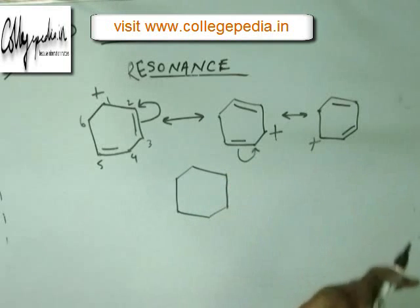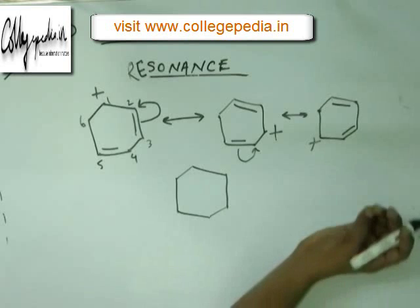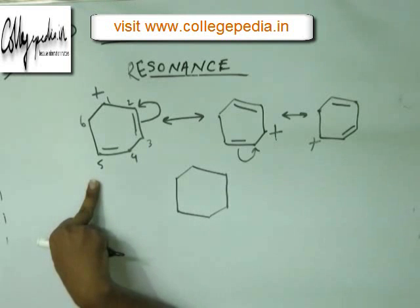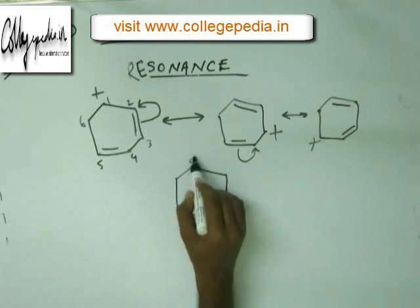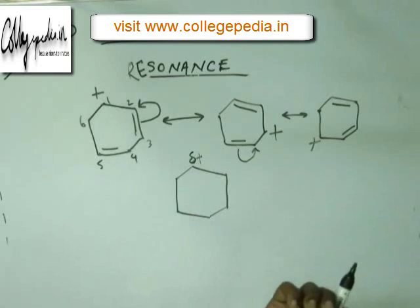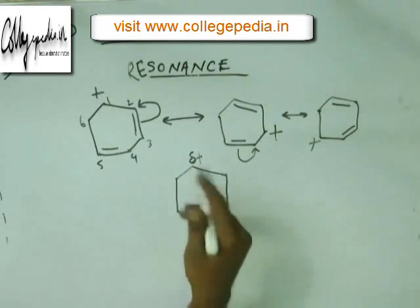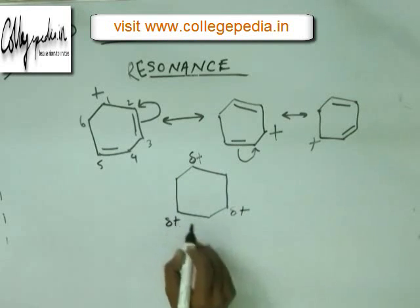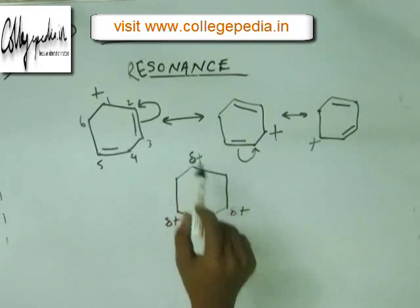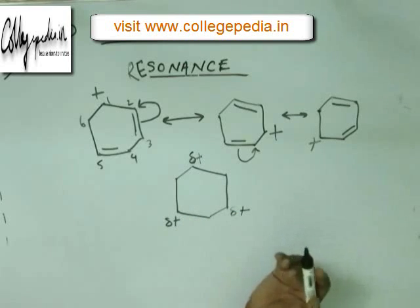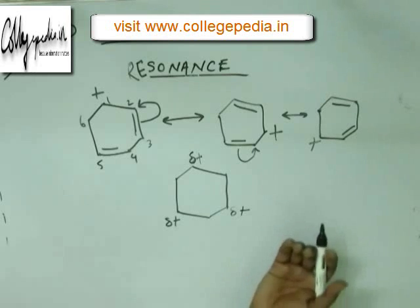We don't know the exact distribution of the plus charge. All we know is the plus charge is distributed at three positions and each position will have some fraction of plus charge. So we write δ+ at each of those positions. This δ may be 0.7, 0.8, 0.6, or 0.35 — we don't know exactly. But it is some fraction of the plus charge, symbolized by δ. Some fraction is at each position; they may be equal or they may not be equal — whatever they are, the charge is indeed distributed at these three positions.